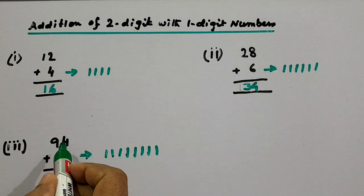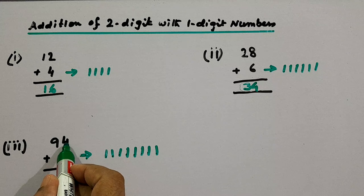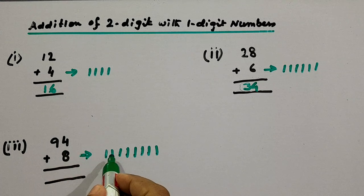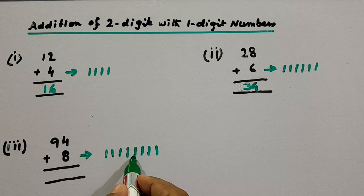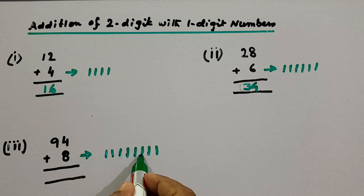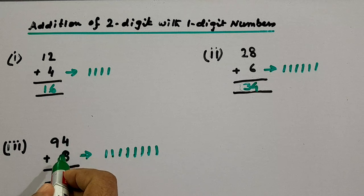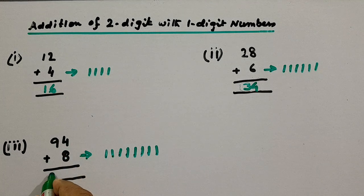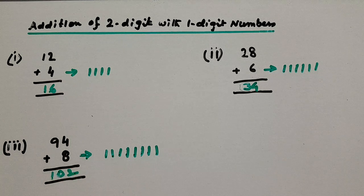Now we will continue the addition after 94. So the next number is 95, then 96, 97, 98, 99, 100, 101, 102. So 94 plus 8 is 102. This is the answer.